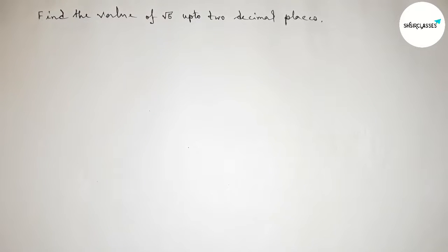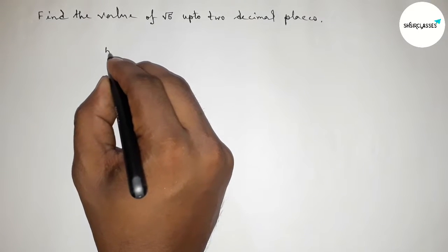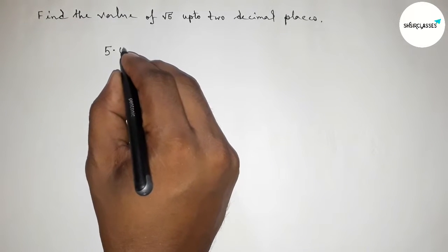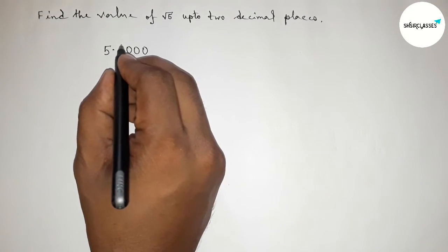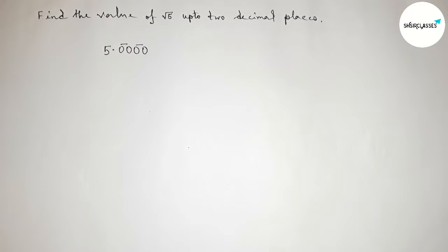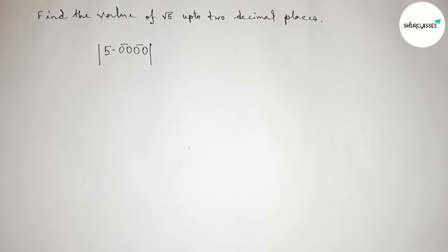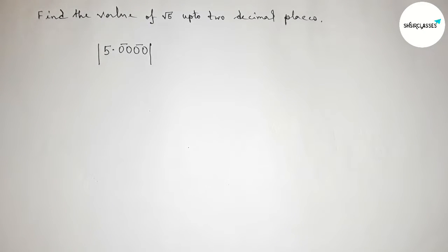First of all, write down the number 5. Next, place a decimal point here. For up to two decimal places, we have to write four zeros after the decimal point, making them into two pairs of zeros. Now draw the division line on both sides.